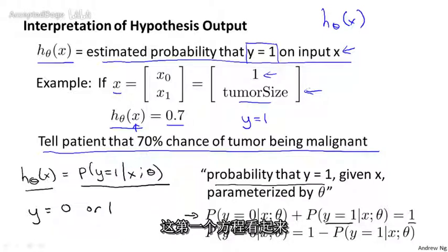This first equation looks a little bit more complicated, but it's basically saying that probability of y equals 0 for a particular patient with features x, given our parameters theta, plus the probability of y equals 1 for that same patient with features x, and given our parameters theta, must add up to 1.